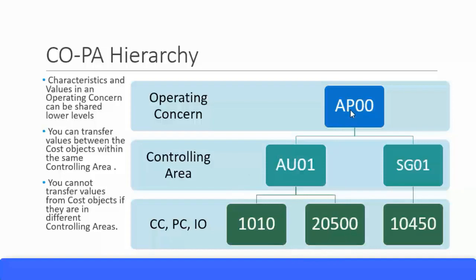Now there is something called characteristics and values, which we'll look at in more detail later. These are part of the operating concern. For a profitability analysis in an operating concern, you would identify what characteristics and values you are going to use. These characteristics and values defined in one operating concern can be shared across all the lower levels.